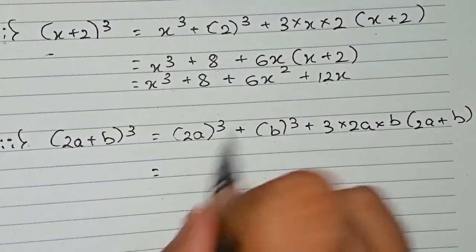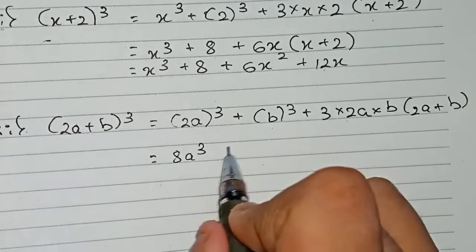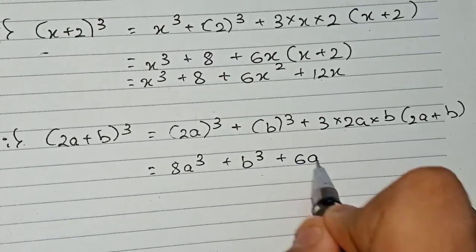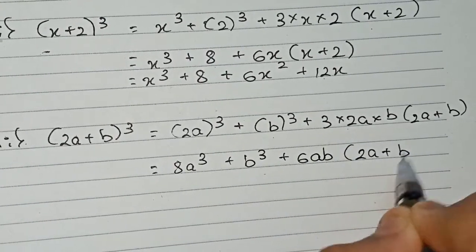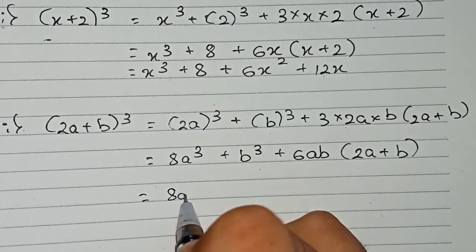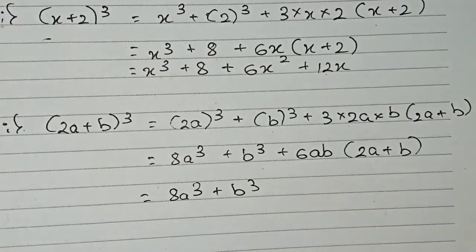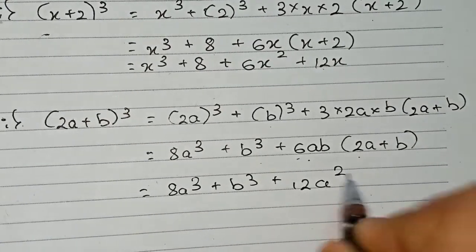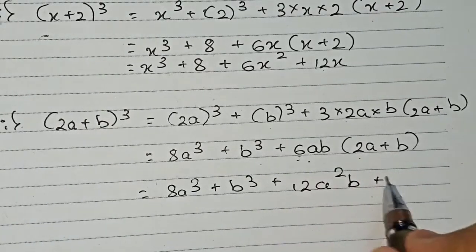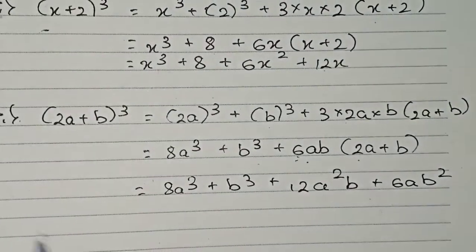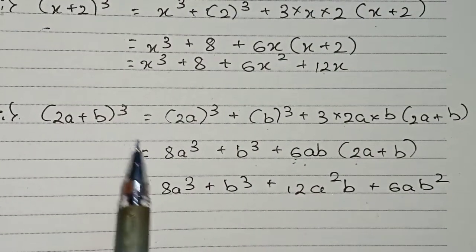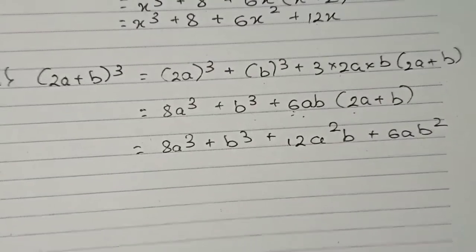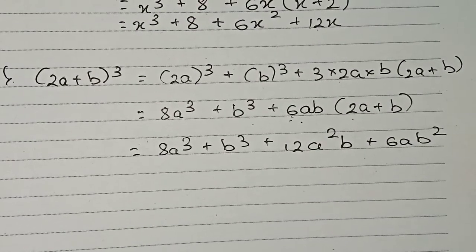2a to the power 3 becomes 8a cube, plus b cube, plus 6ab into 2a plus b. Expanding: 6ab into 2a gives 12a squared b, and 6ab into b gives 6ab squared. So the expanded form of 2a plus b whole cube is 8a cube plus b cube plus 12a squared b plus 6ab squared.